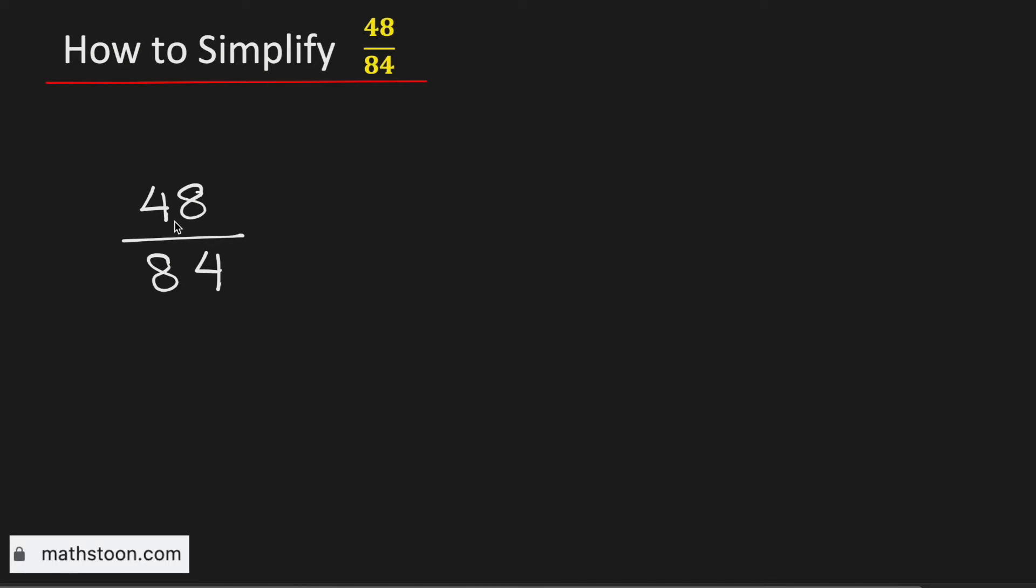In this video we will simplify the fraction 48 over 84 in its simplest form. To simplify it, we will first find the greatest common factor of these two numbers.